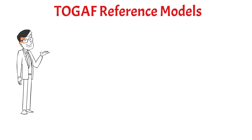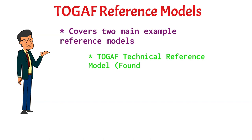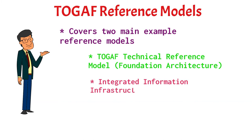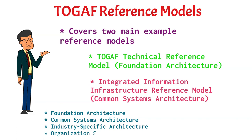TOGAF reference models are essentially samples of how we should build our architecture, and it covers two main reference models. The TOGAF technical reference models, which is considered a foundation architecture, and the integrated information infrastructure reference model, which is considered a common systems architecture. When dealing with architecture, there are four levels typically addressed: foundation architecture, common systems architecture, the industry-specific architecture, and the organization-specific architecture.